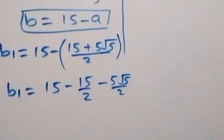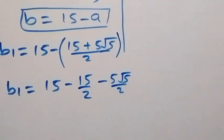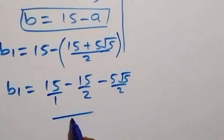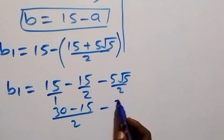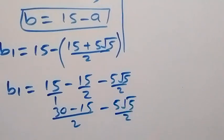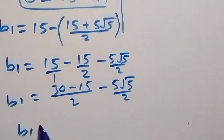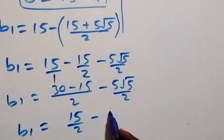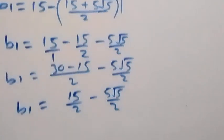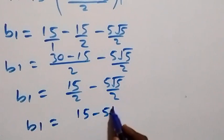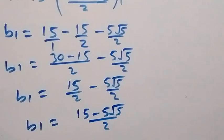Bringing this together with LCM of two, we get thirty minus fifteen minus five root five over two, which simplifies. So b1 equals fifteen minus five root five all over two.